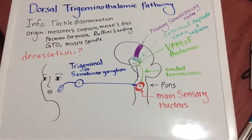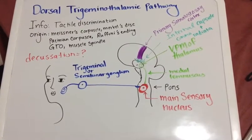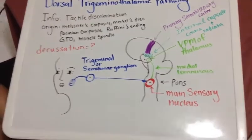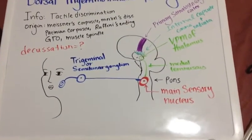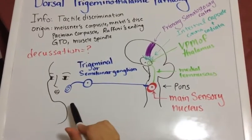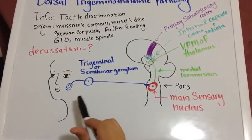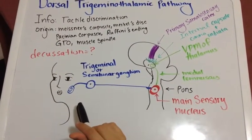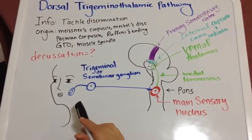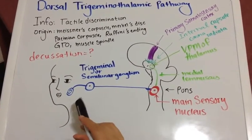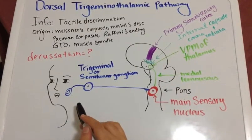The dorsal trigeminothalamic pathway takes information regarding tactile discrimination. The origin includes Meissner's corpuscle, Merkel's disc, which has to do with touch, Pacinian corpuscle, which has to do with vibration, Ruffini, GTO, and muscle spindle.